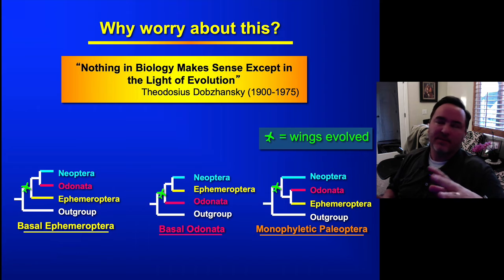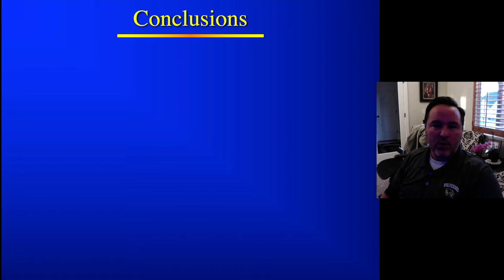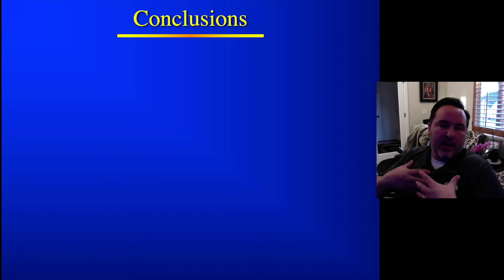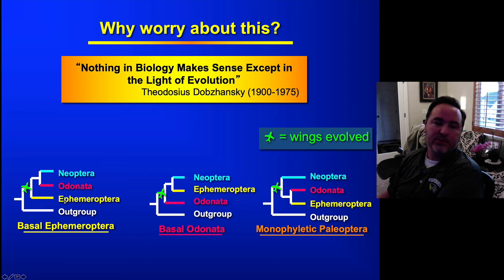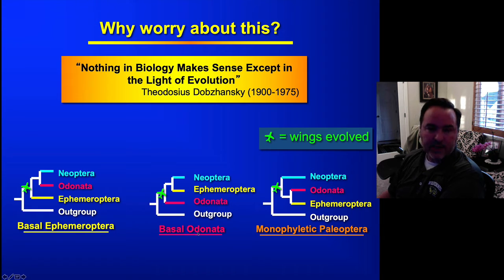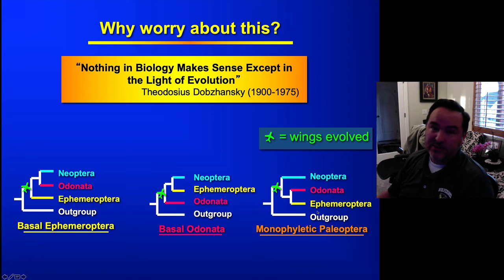So why even care? Why make such a fuss about whether it's basal Ephemeroptera, basal Odonata, or whatever? It's because I'm interested in how wings evolved, and we know that wings evolved prior to the origination of these three lineages. I want to figure out which lineage is the best one to study. If mayflies are the basal lineage, we ought to spend more time learning about the biology and genetics of Ephemeroptera to understand the evolution of flight. If basal Odonata is correct, we ought to look at Odonata more. If it's monophyletic Palaeoptera, we ought to look equally at both. As more data has come out, it seems monophyletic Palaeoptera is probably correct — though we're still unsure, and I'm working on a study with a colleague at BYU looking at this.